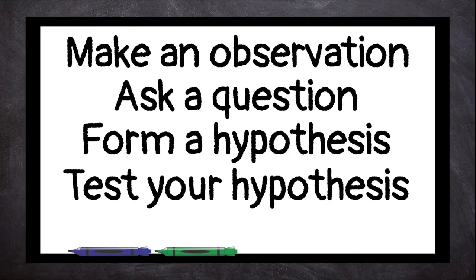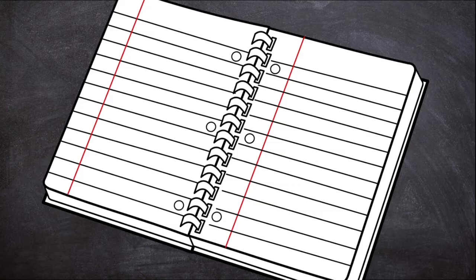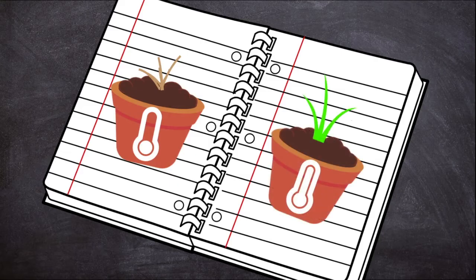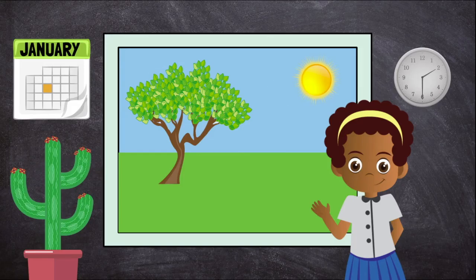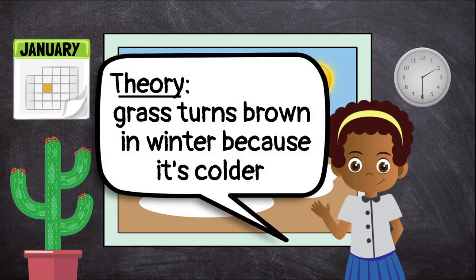The fifth and final step is to analyze your data and draw a conclusion. Let's say that looking back through your notes, you notice that the grasses that were kept cold turned brown, while the grasses that were kept warm stayed green. You may come to the conclusion that grass turns brown in the winter because of the colder temperatures. Once your hypothesis has been proven, it becomes a theory.